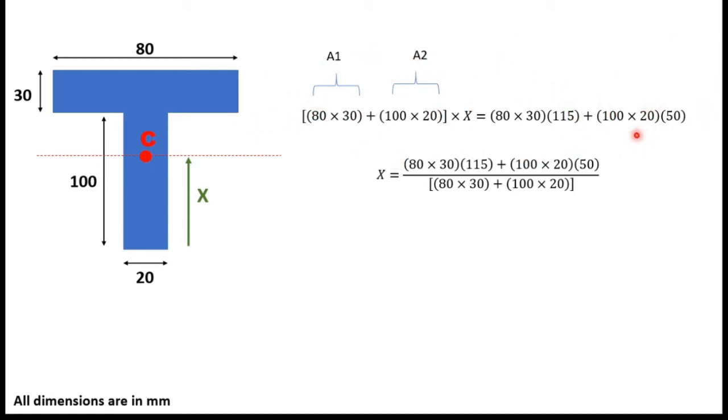We're going to divide the section into areas, which one is A1 and which is A2 area. A1 and A2 are the two areas of the section.